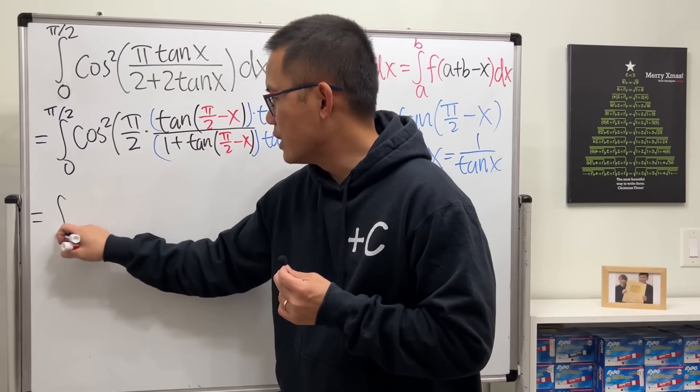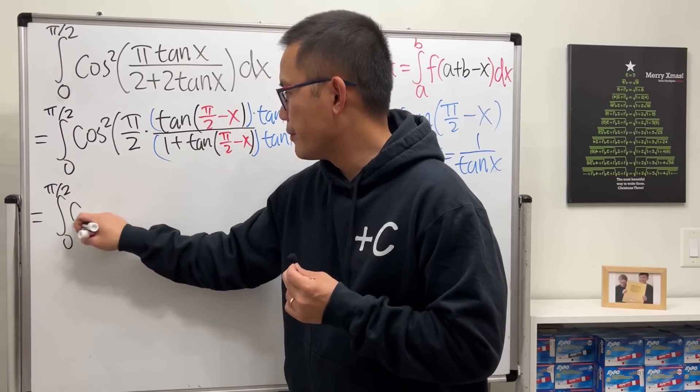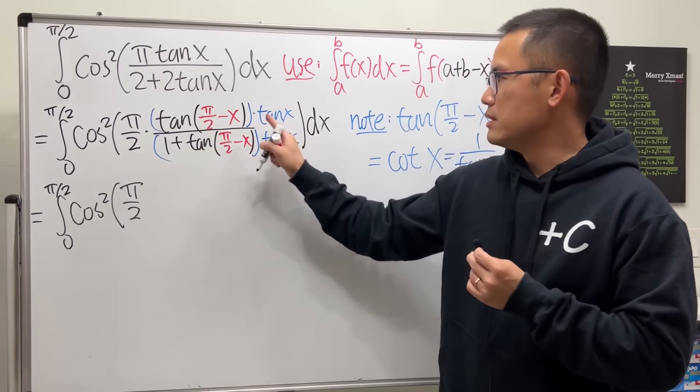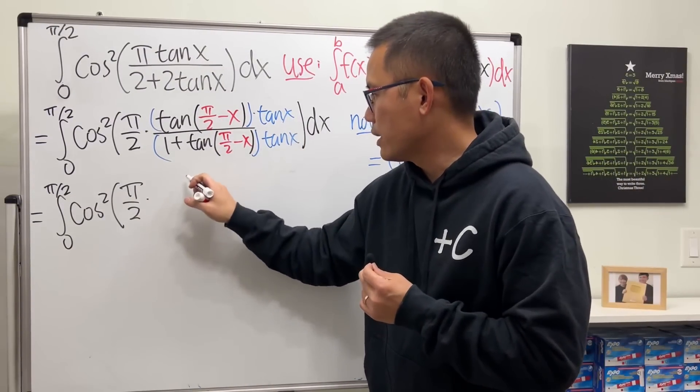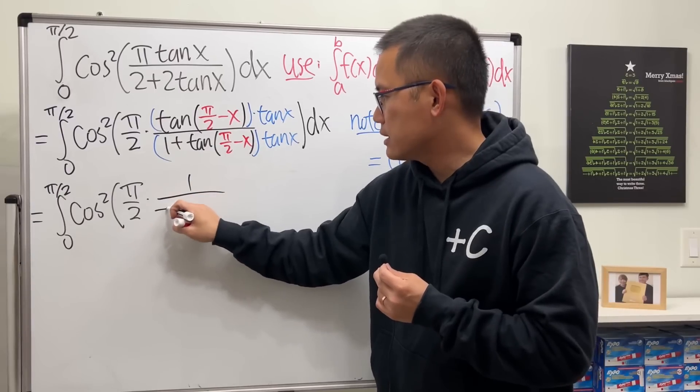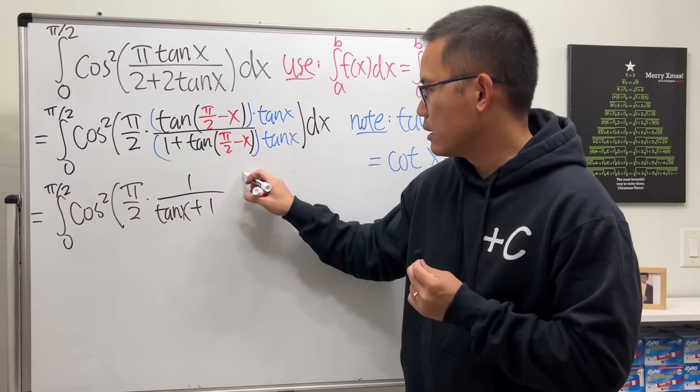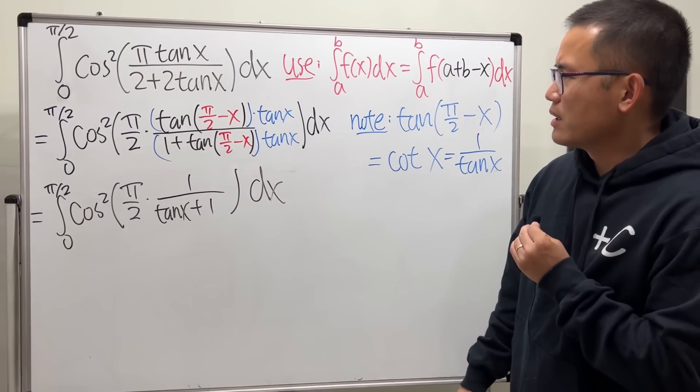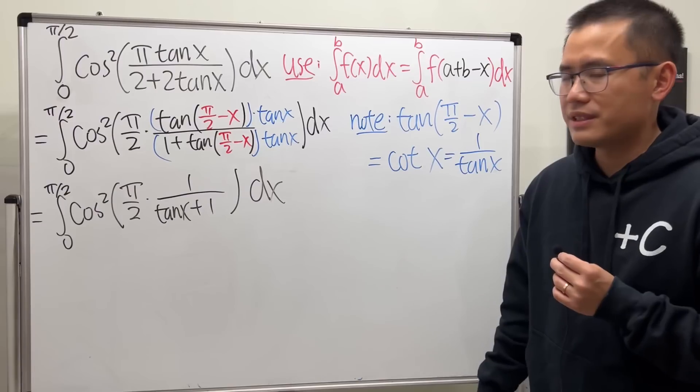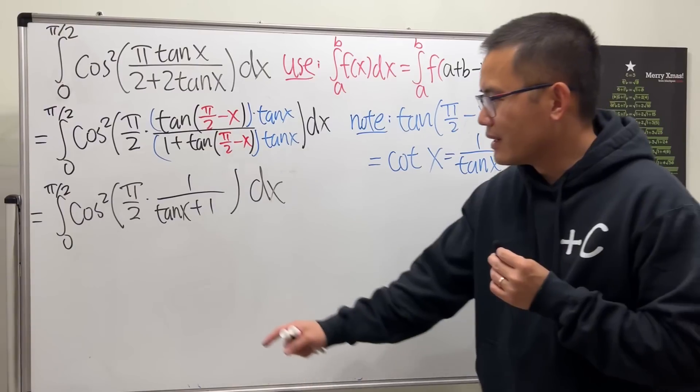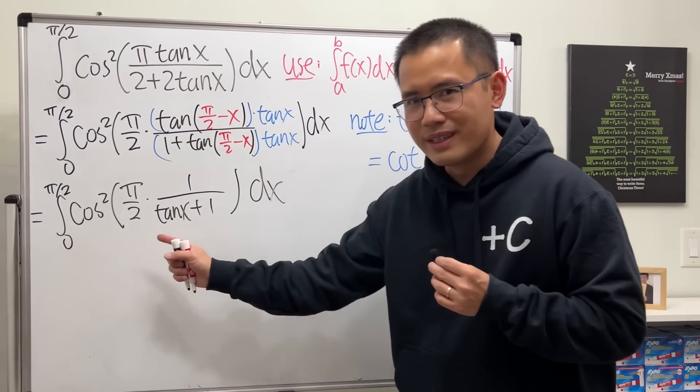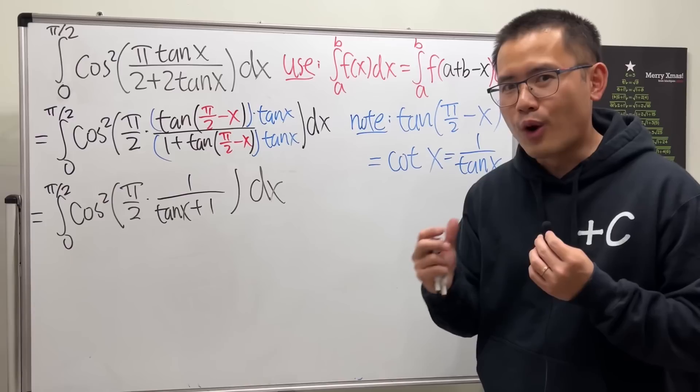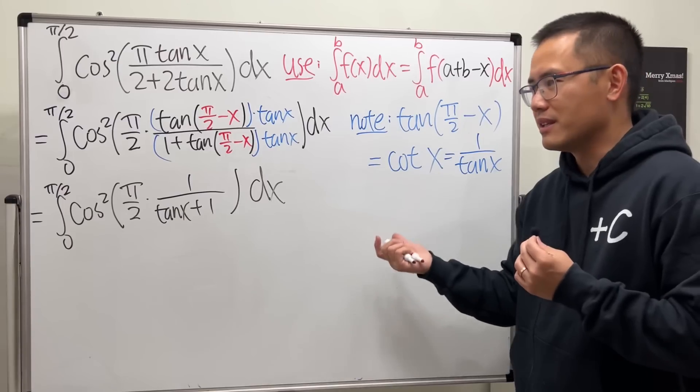So this is the integral going from 0 to pi over 2. Cosine squared, and then we have pi over 2. This times that is the same as this times that. It's just 1. So it's 1 on the top over tangent x plus 1. Is this really helpful though? Because now this and that look very different. Well, thankfully, we have the pi over 2. So if we can somehow have pi over 2 minus something, then we can use the co-function identity for cosine. And then we can get sine.